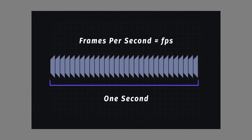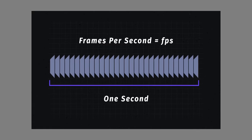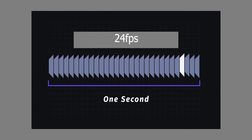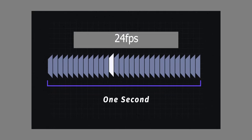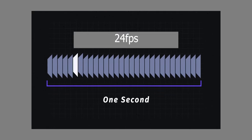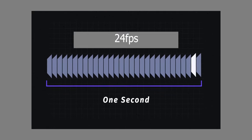For example, a frame rate of 24 FPS contains 24 individual frames or still photos within one second. To shoot a narrative that emulates the look of traditional cinema, you would want to shoot at a frame rate of 24 FPS.